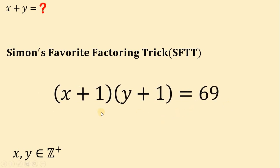At this point, take note that x plus 1 times y plus 1 equals 69. And we know that x and y are both positive integers. So what we're going to do here is to factor out 69. And 69 can be factored as 23 times 3 or 3 times 23. Why not use 1 times 69?